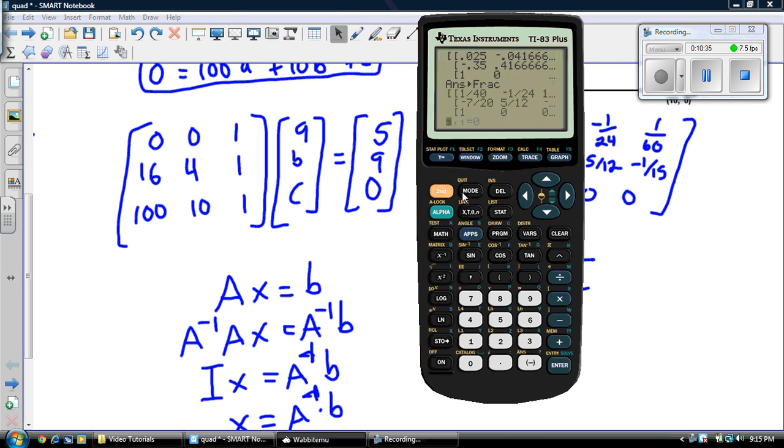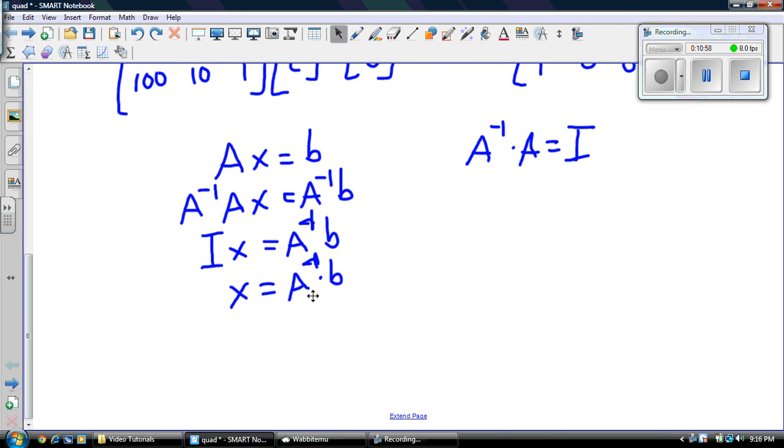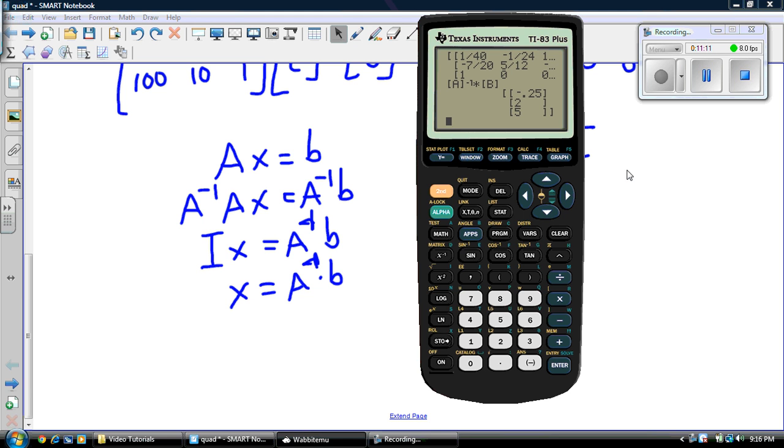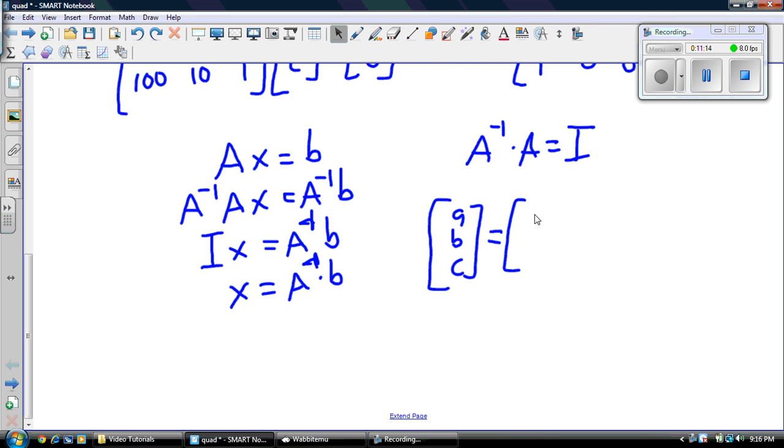And then I'll go second function quit again. Then, I go back to matrix. Second function matrix again. A inverse times, and second function matrix again. Get my B there. And I press enter. And recognize I just solved for my A, B, and C. So, from that, I can write my A, B, C is equal to negative 0.25, 2 and 5.